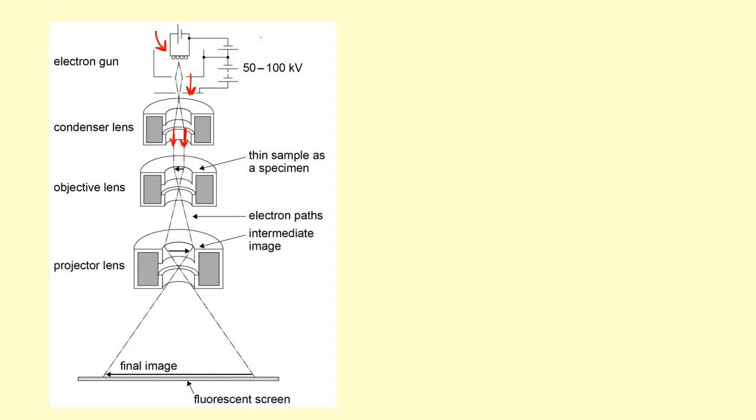These parallel rays go through a thin sample of specimen. For example, the cells that we saw a minute ago need to be sliced into very thin sections. The electrons can either go through them if it's thin enough or be absorbed if it's thick. After that it goes through the objective lens which deflects the ray again.